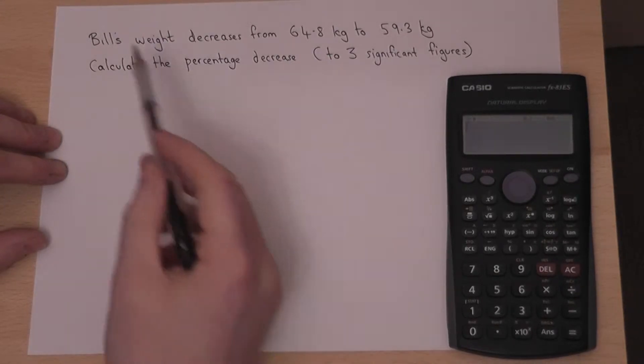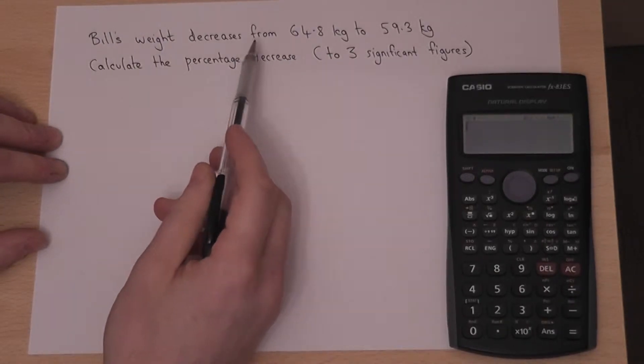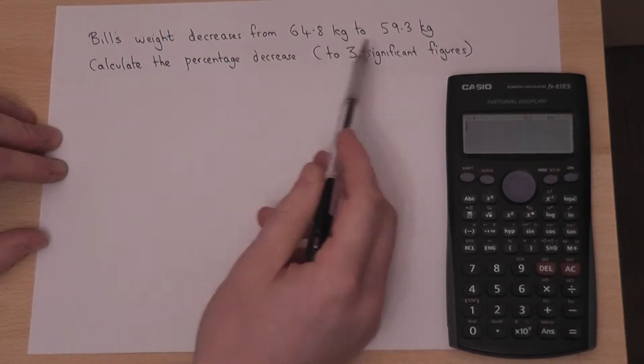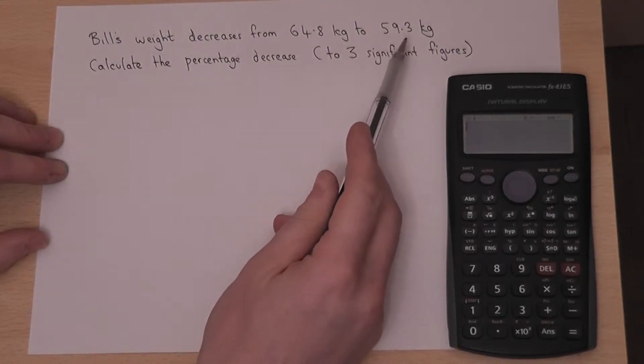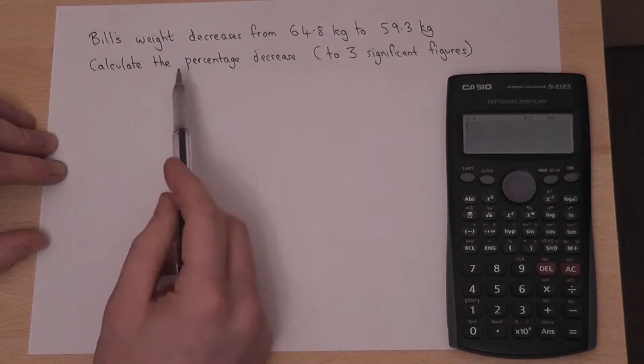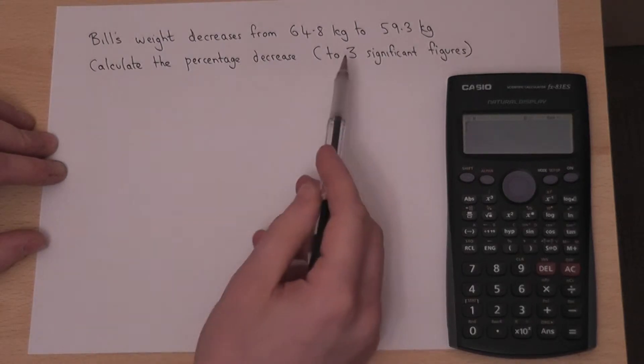In this question we're told that Bill's weight decreases from 64.8 kilograms to 59.3 kilograms and we want to find what the percentage decrease is to three significant figures.